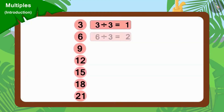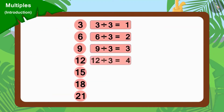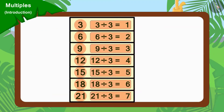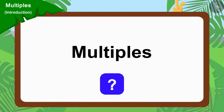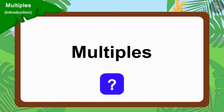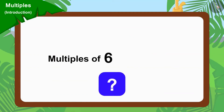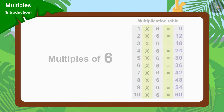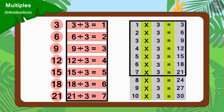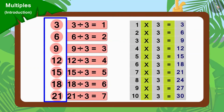Because all these numbers can be divided by 3, these numbers are multiples of 3. Do you know another interesting thing about multiples? We can find the multiples of any number from its multiplication table. For example, if you look closely, you will find all these numbers in the multiplication table of 3.